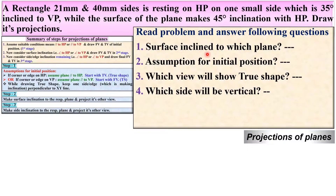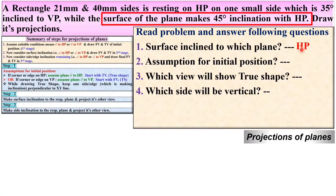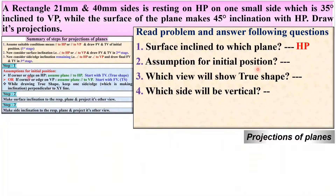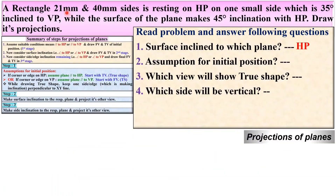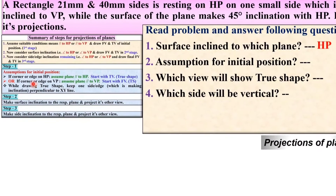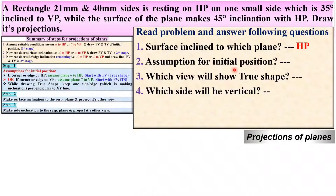Surface inclined to which plane? It is given that the surface of the plane makes 45 degree inclination with HP, so the answer is: inclination of the surface with HP. Next, assumption for initial position: if one corner or edge is on the HP, then you should assume the plane is parallel to HP. Here it is given that the rectangle is resting on HP on one small side — that means one edge is on the HP — so definitely you should assume the plane is parallel to HP.